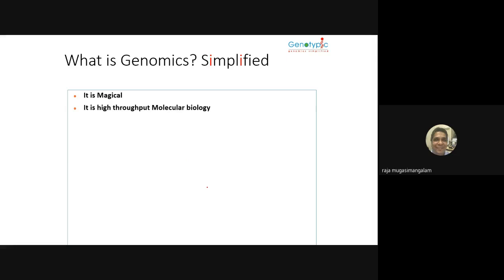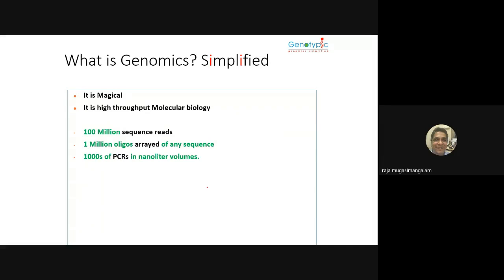Genomics is simply high-throughput molecular biology: 100 million sequence reads, one million oligos spotted on a glass slide, thousands of PCRs in nanoliter volumes — all at ultra-low price per base. Genomics is an enabling technology, including for proteomics — a proteomics person who has the whole bacterial genome sequence and can translate all six frames will do far better mass spec work than someone without DNA sequence data.